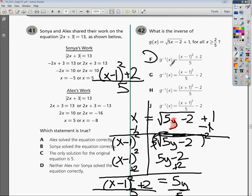It's got the (x - 1)². It's got the plus 2. And everything is divided by 5. It shows the right notation for the inverse of g(x).